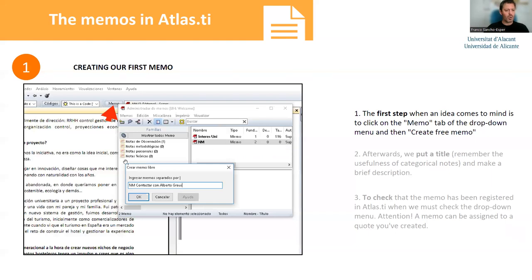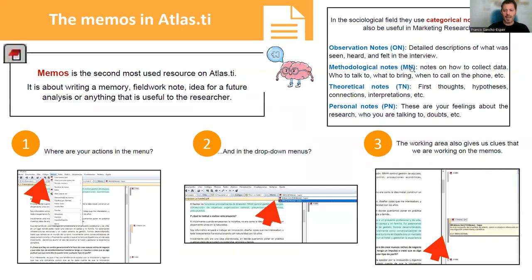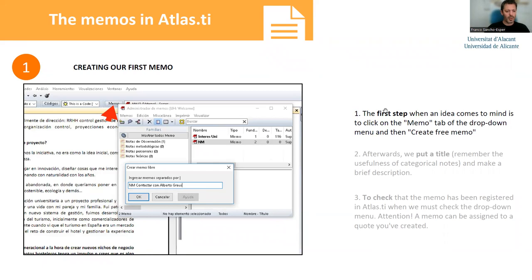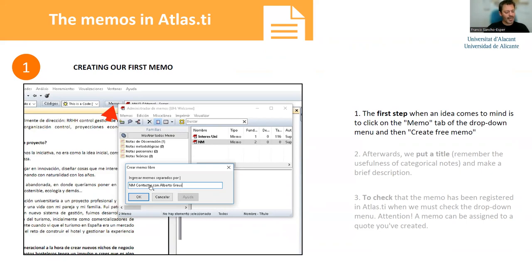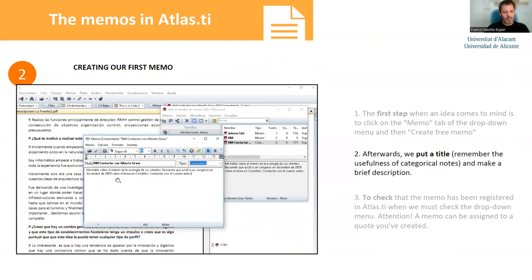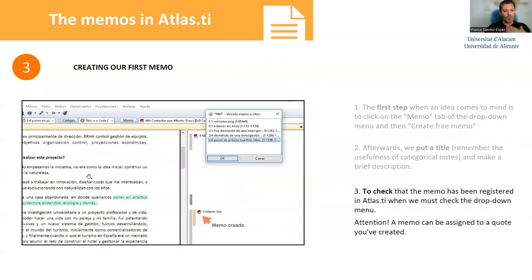To create a memo, you click on memo in the menu, and you can put in the type: observation note (ON), methodological note (MN), theoretical note (TN), or personal note (PN). For example, a methodological note might be titled 'MN — get in touch with Alberto Gauss.' First you put the name of the memo, and afterwards you can give more detail. You can then verify that the memo has been properly created. You'll see that the memo is similar to the quote, but the memo has a title displayed.